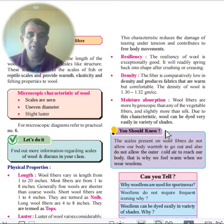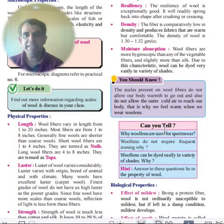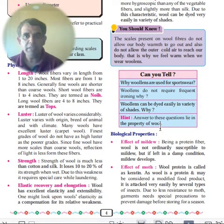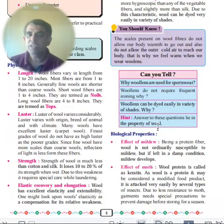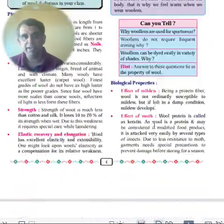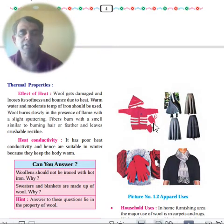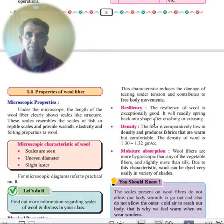To summarize physical properties: length, luster, strength, resilience, elasticity, density, moisture. Biological: mildew and moth. Thermal: heat damage and poor heat conductivity.